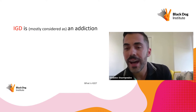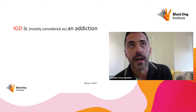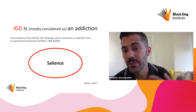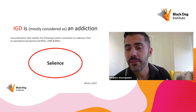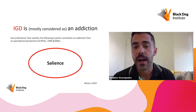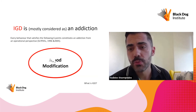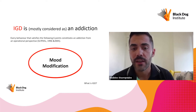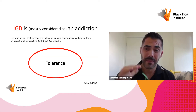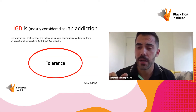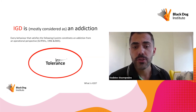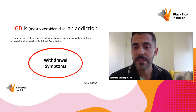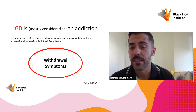The next criterion is mood modification: one is gaming to moderate the way they feel. They initially start to feel better and progressively continue just to feel less worse. Then we have tolerance, which means they gradually need higher doses of the behaviour to achieve the same outcome — and this is related to game mechanics. We also have withdrawal symptoms, which in the case of internet gaming disorder are mostly psychological, such as irritability and frustration when one is not in the game.